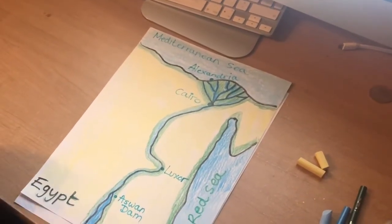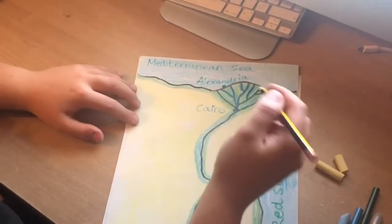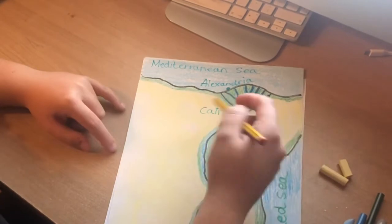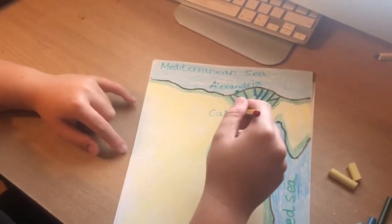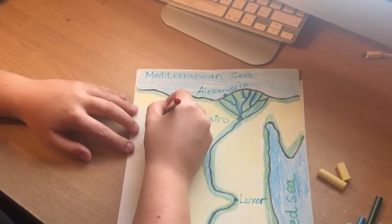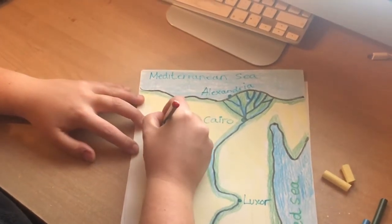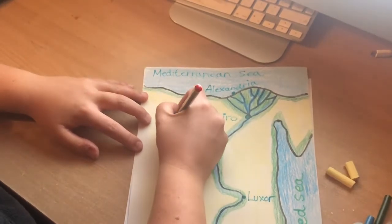Okay, now what you might like to do finally if you've got a little bit of time is to add on some of those key features that we know are in Cairo and Giza. So you could, as we've practiced so much drawing our 3D pyramids, you might like to draw those on.